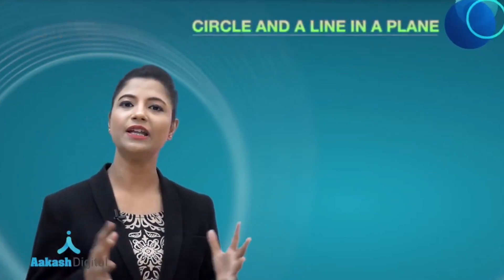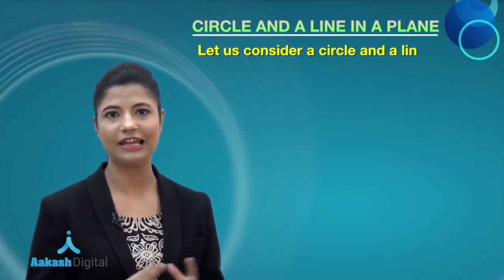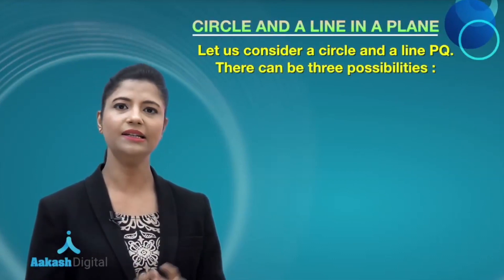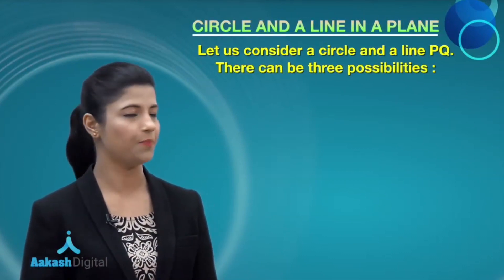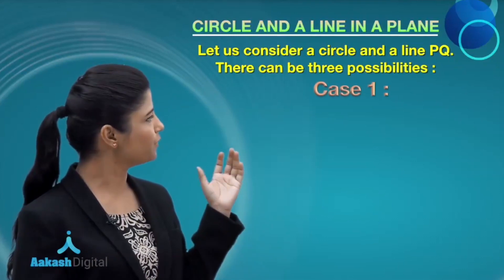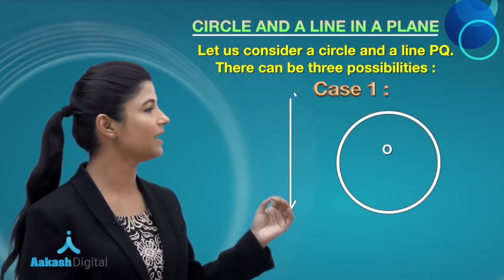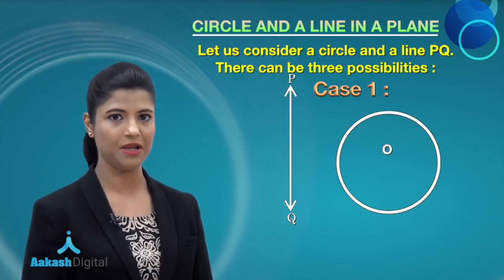You may encounter various cases where you have a straight line and a circle lying in a plane. In that case, three cases arise. For the first case, we consider a circle with center O and a straight line PQ lying in a plane.